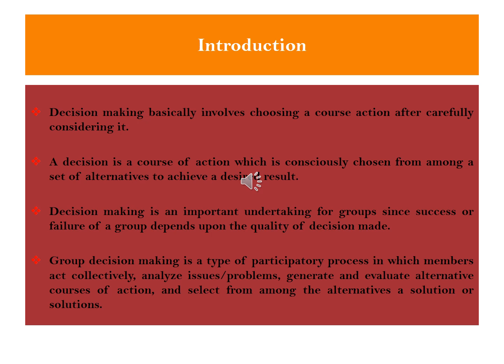Decision making involves choosing a course of action after careful consideration. A decision can be understood as any course of action which is consciously chosen from among a set of alternatives to achieve a desired result. In other words, achieving a given result might require different ways of doing it — these are what we call alternatives. Some alternatives could be good; others may not be appropriate, and therefore a conscious consideration of the best alternative needs to be done. That is what we mean by decision.